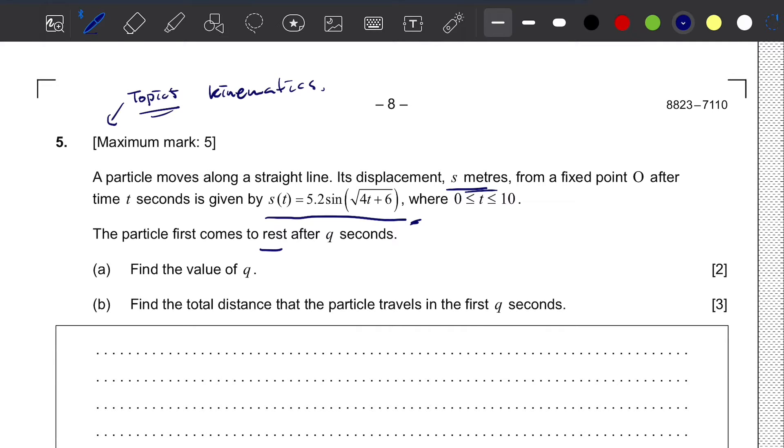We need to find the value of q. At rest means when ds/dt is equal to 0, or the displacement is equal to 0. So we first have to differentiate function s(t) in terms of t. We are doing ds/dt.